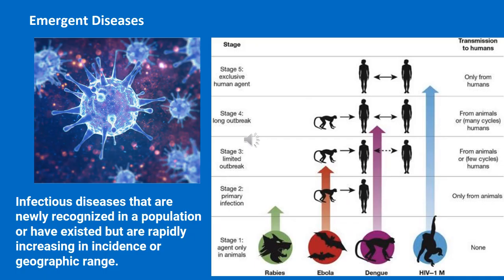An emergent disease is something that may have been around in the background, but it's a new type of disease — newly recognized in a population. Or it could have existed but rapidly increases in incidence or range. COVID-19 was an emergent disease that came from the animal kingdom, got into the human population, and expanded rapidly. That was definitely a good example of an emergent disease.